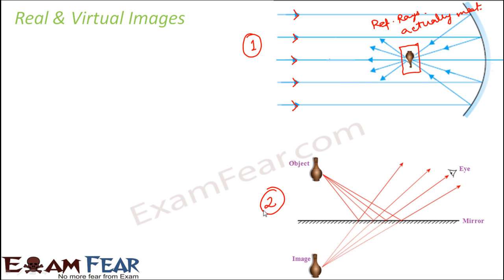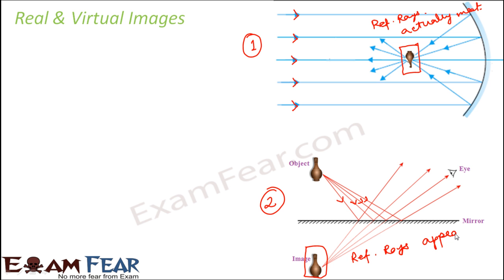In scenario two, after the incident rays reflect, the reflected rays do not appear to meet ever. What we do is try to extend them towards the back side using dotted lines, and that is where they appear to meet — that is where the image is formed. So in this case, the reflected rays do not actually meet, but they appear to meet at this point.